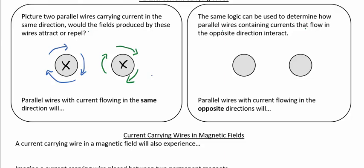Now this might be a little bit surprising: even though both of the currents are in the same direction, if you look at where their fields are going to interact, notice how in the region between them they have fields moving in opposite directions. We know that opposite poles of a magnet will attract each other, and so when we have these opposite fields this is also going to form an attraction. Remember, it's all about the direction of the fields at those points.